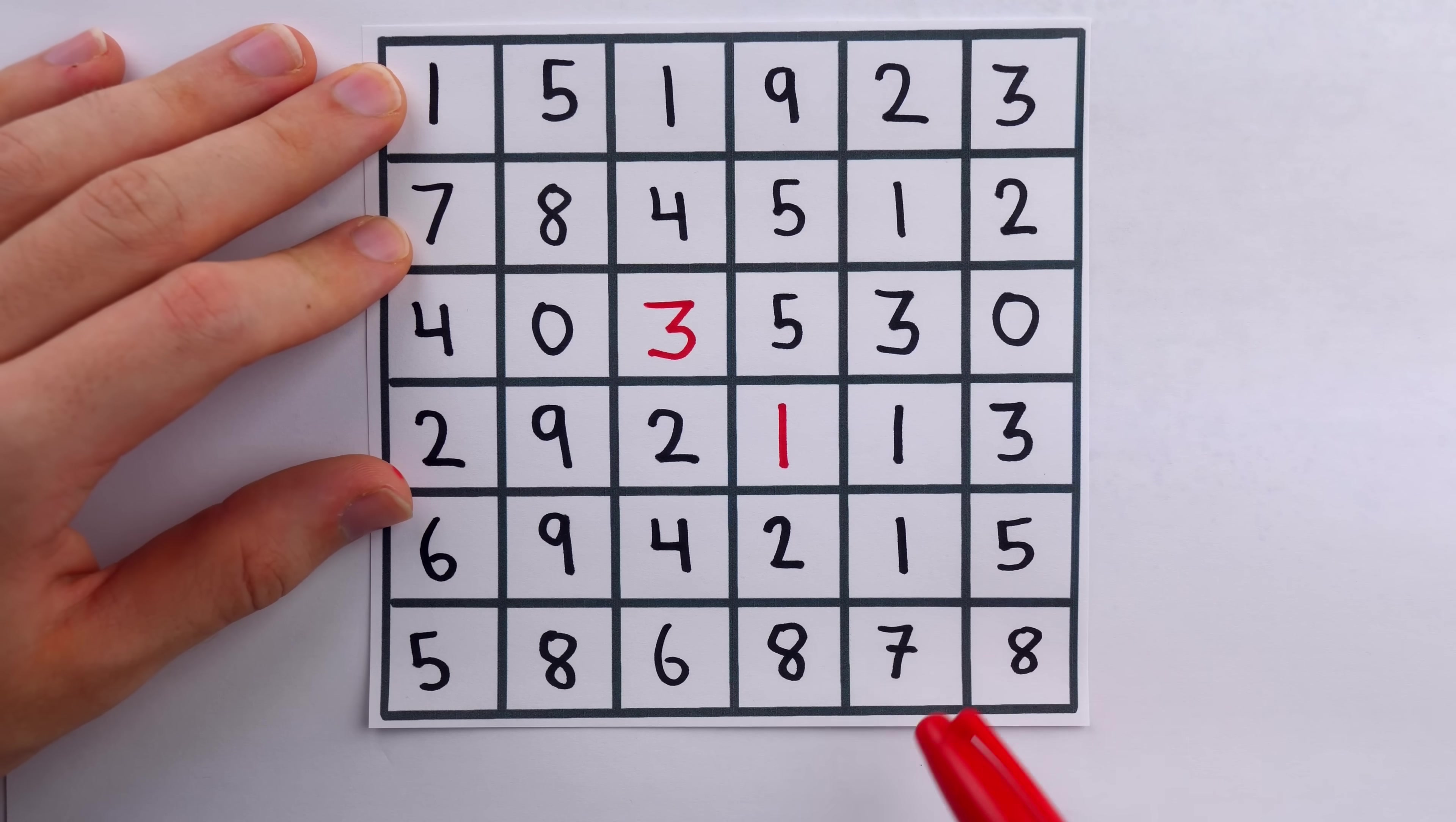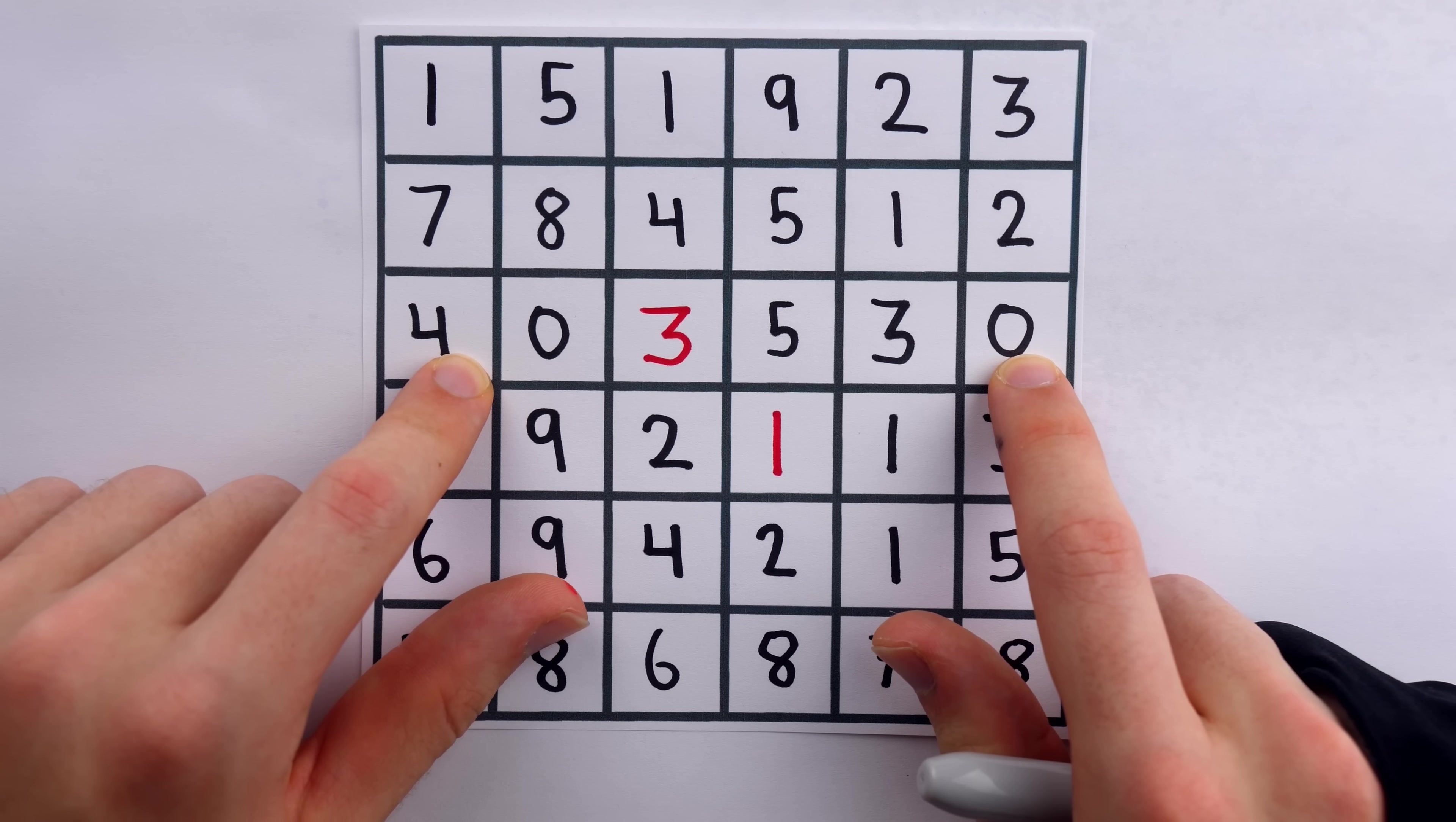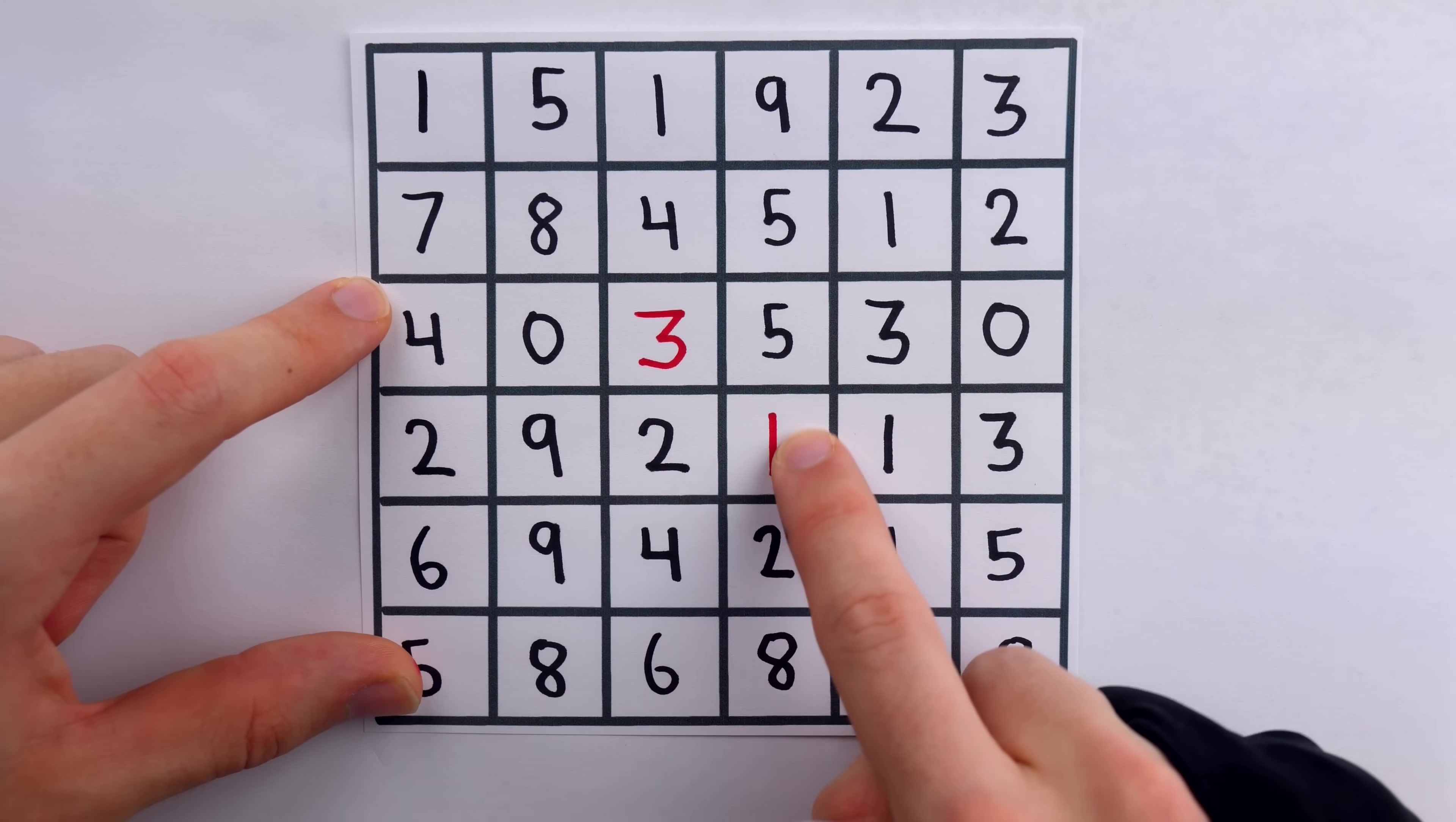So to describe the pattern simply, the middle number is just halfway between the two numbers on the left and right. So looking at this, to find the first missing number, 40 plus 30 is 70. So the middle number would be half of 70 or 35. So this has to be three. Same thing over here. 29 plus 13 is 42. So halfway between would be half of 42, which is 21.